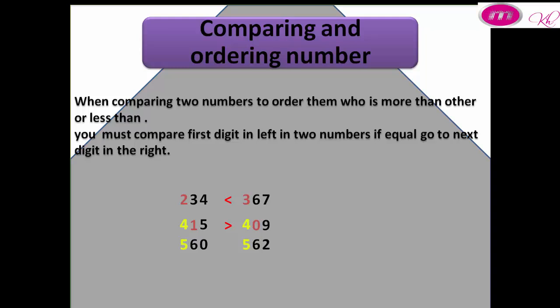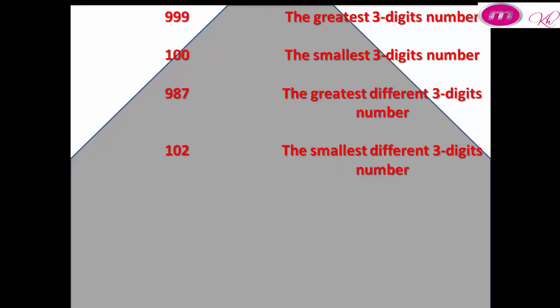In the last example, we have 560 and 562. We must look at the first digit on the left: 5 and 5. Go to the right in tens: 6 and 6. Go to the right in units: 0 and 2. That means the second number, 562, is more than 560. You must know that the greatest three-digit number is 999.